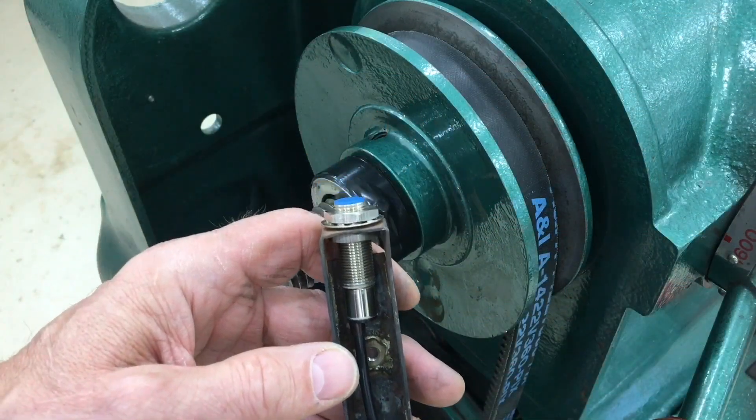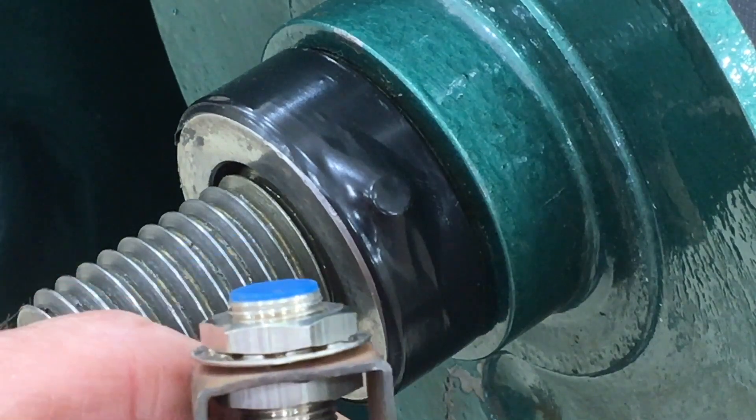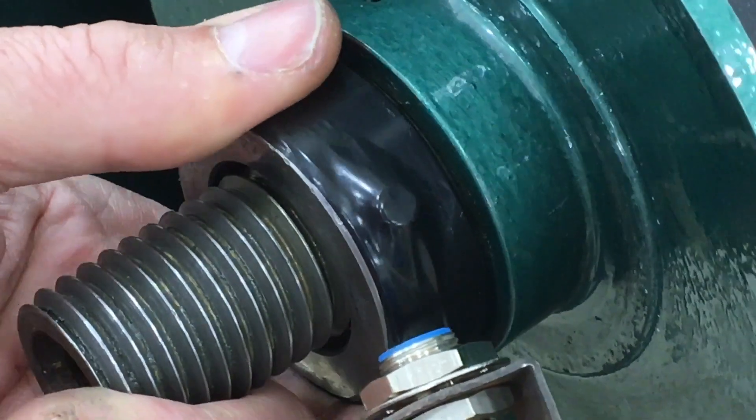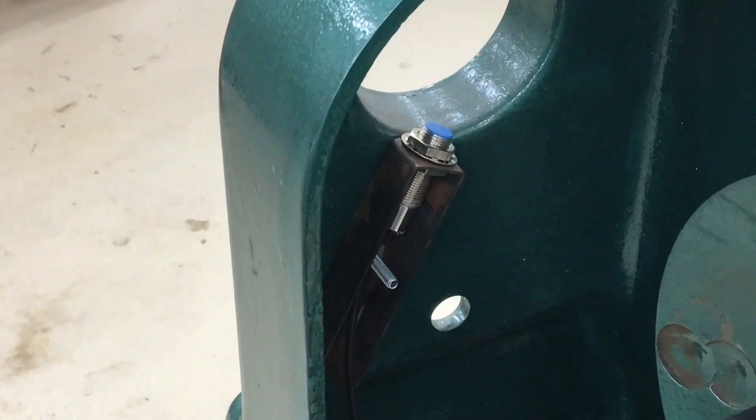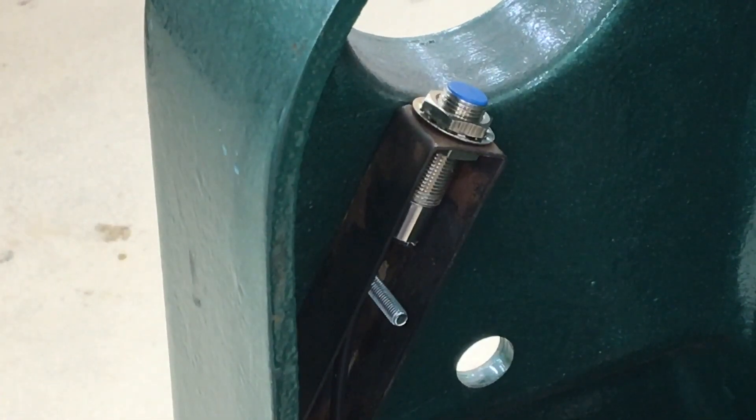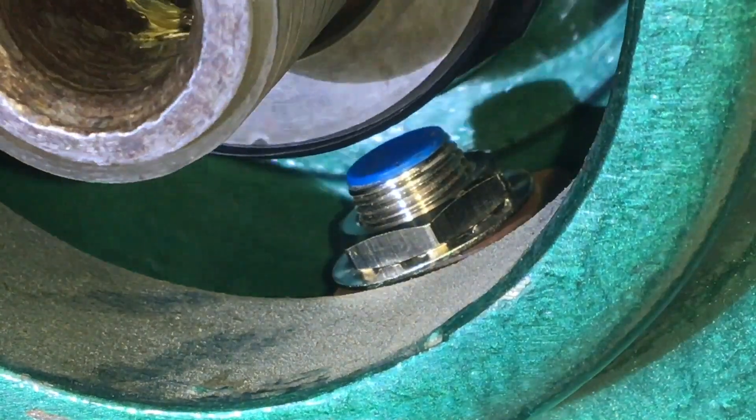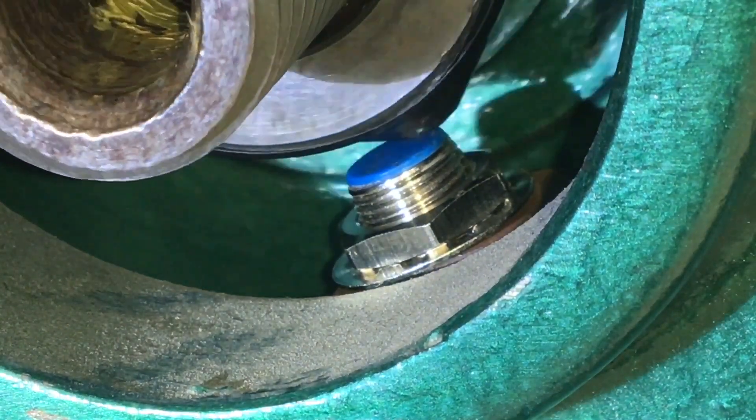This is the magnetic pickup for the tachometer, and you can see where I put the magnet on the spindle. There's the pickup attached to the cast iron belt guard, and it can be adjusted for a close fit to the magnet on the spindle.